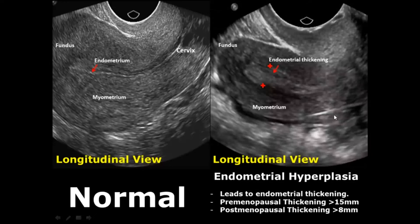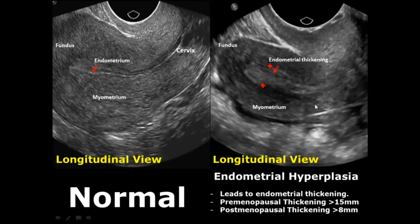Endometrial hyperplasia is the abnormal thickening of the endometrial glands, which will lead to endometrial thickening. In premenopausal women, if the thickening exceeds 15 mm, it is considered endometrial hyperplasia. In postmenopausal women, if the thickening exceeds 8 mm, it is also considered endometrial hyperplasia.